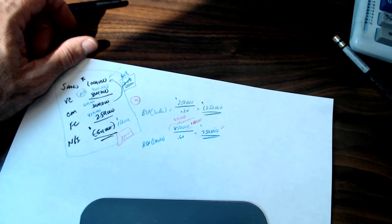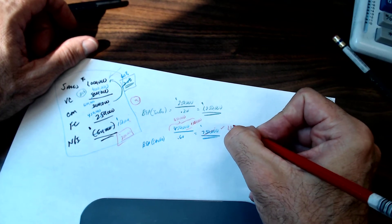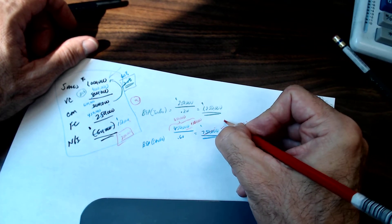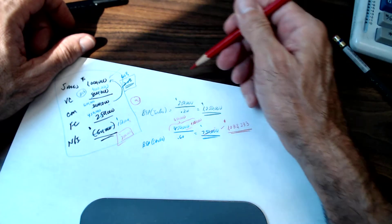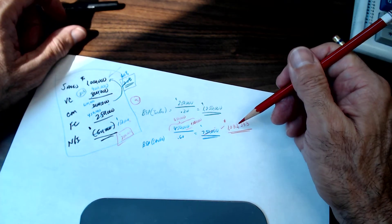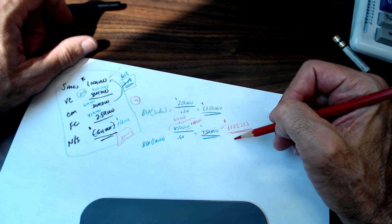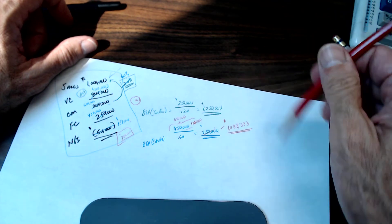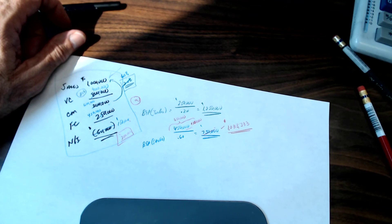Six hundred fifty thousand divided by 0.60 gives us $1,083,333. That's what my sales would need to be so that my 60% contribution margin ratio would cover my fixed costs and yield $200,000 of net income.